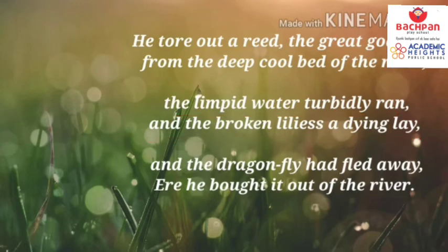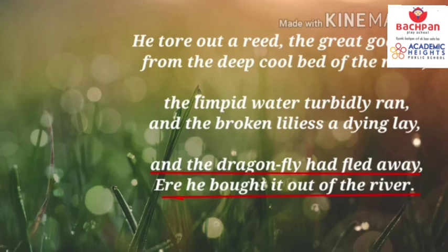And the dragonfly had fled away — here he brought it out of the river. The meaning of these last two lines is that the dragonflies flee from the river when Pan pulls the reed out, because Pan is destroying the lilies and scaring the dragonflies. He cut the reed, and the clear water of the river is turned into muddy water. The poet witnesses that Pan is disrupting a piece of the ecosystem, and all these things happen in a violent way.